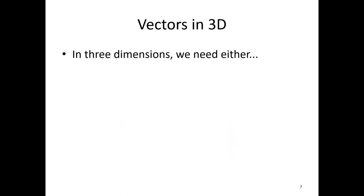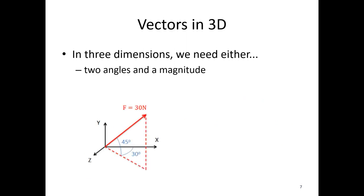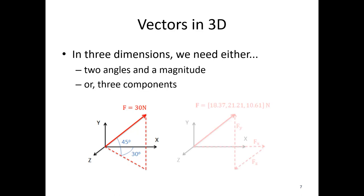In three dimensions, we'd either need two angles and a magnitude, or we'd need three components. For magnitude and direction in 3D space, we need two angles to define direction. In three dimensions we obviously have three components: an x, y, and z component. Converting between forms in this case is a little more complicated — it's still based on trigonometry, but it involves multiple triangles.